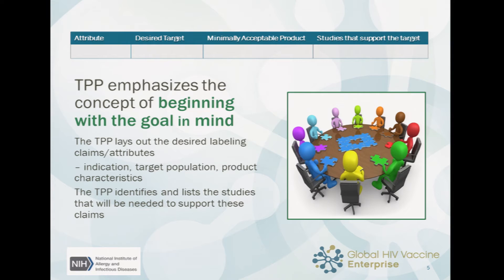The goal was that the use of this template would help focus the drug development process to ensure that the appropriate studies were being done. The target product profile is organized according to the attributes or characteristics of the product that are the goals of your drug development program — that would be the first column, 'attribute.' The next column is filled out with the studies that are intended to support that target, and we'll go through some examples in a minute.